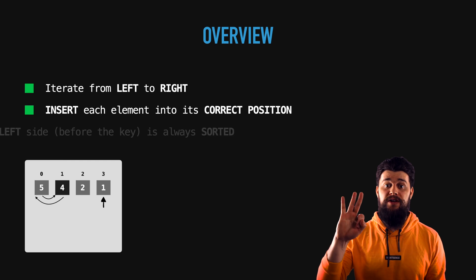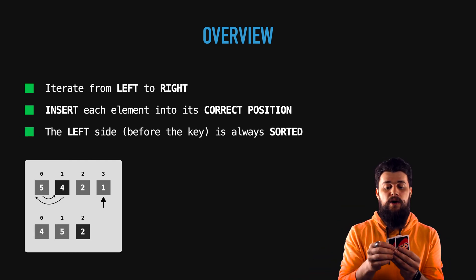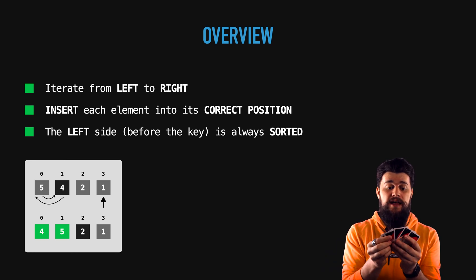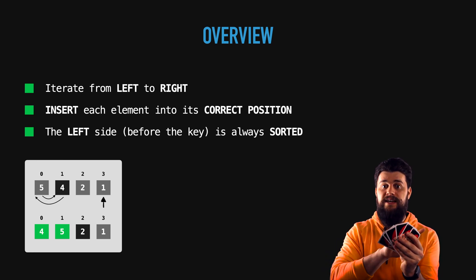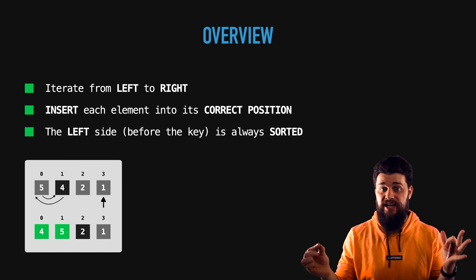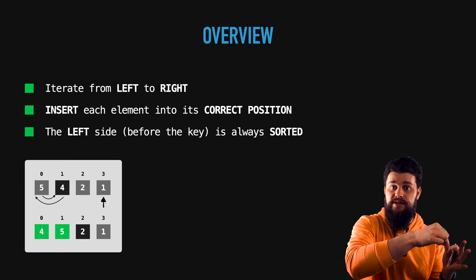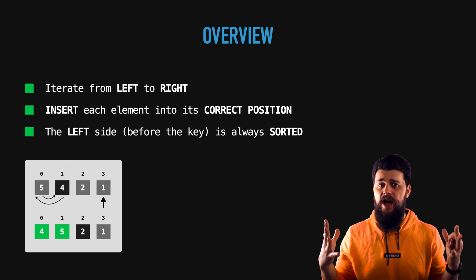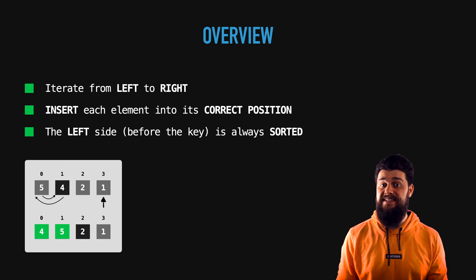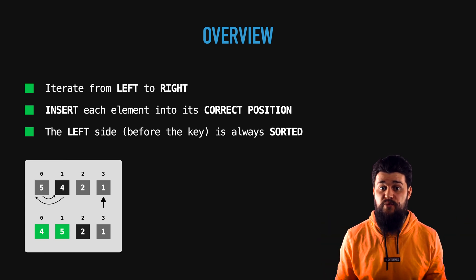And lastly, rule number three: just like in the deck of cards, once you start positioning each individual card into its correct position, the left side — the side that we begin sorting — is always going to be sorted. So if we position each element on the right side into its correct position on the left side, the left side is always going to be sorted. Having these simple rules in mind, we can explore the algorithm, which is really simple to implement and very efficient.